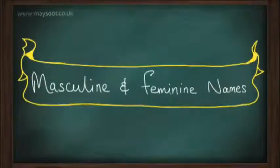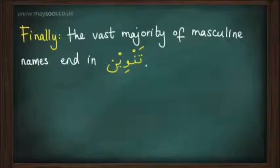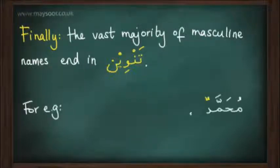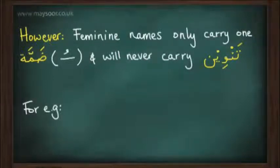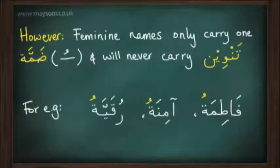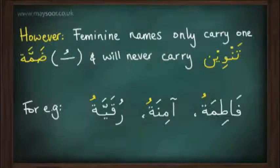Masculine and feminine names: the vast majority of masculine names end in tanwin — for example, Muhammadun, Zaidun, Abbasun. However, feminine names only carry one dhamma and will never carry tanwin. For example, Fatimatu, Aminatu, Ruqayyatu. These names do not end with the dhammatayn — the tanwin — so it would be incorrect to say Fatimatan or Aminatan.